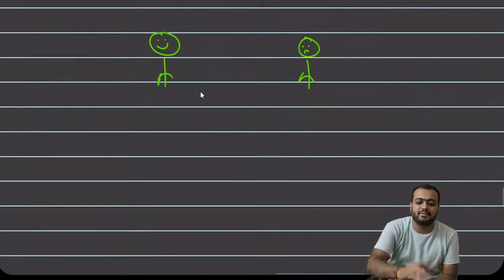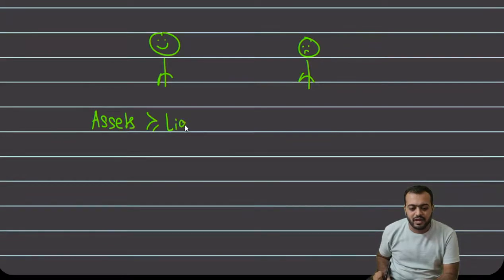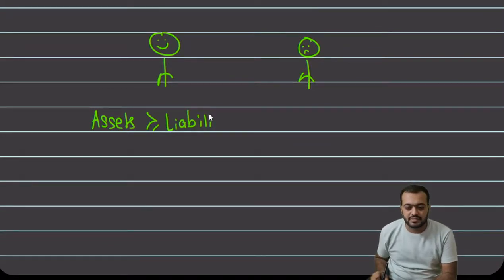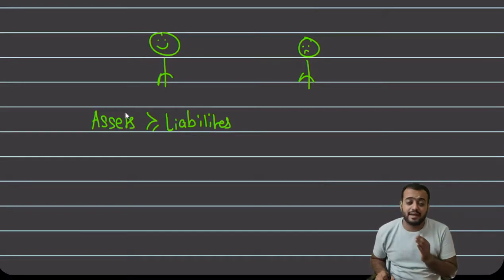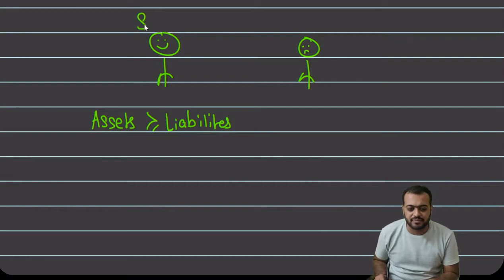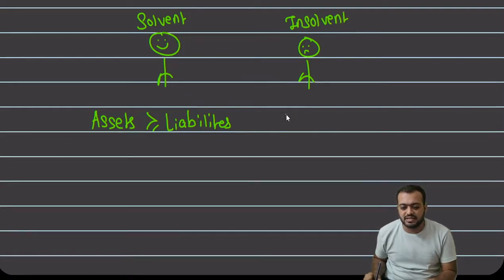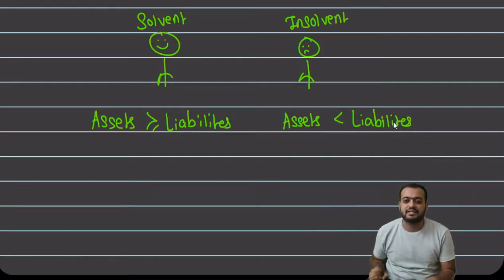लेकिन यह decide कैसे करेंगे कि person solvent है या insolvent? तो बच्चो, अगर किसी person की assets, उसकी liabilities से ज़्यादा है या equal है, तो उस person को Solvent Person बोला जाता है। और Insolvent Person मतलब ऐसा person जिसकी assets, उसकी liabilities से कम हैं — यानी उस पर liabilities ज़्यादा हैं।